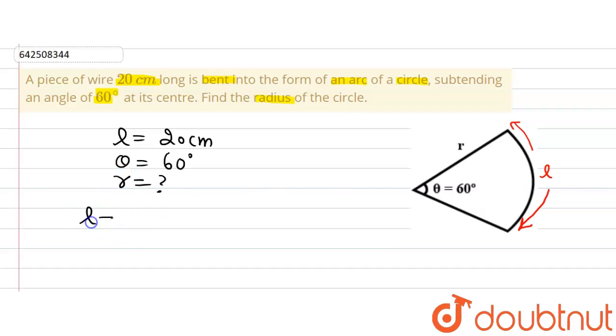We know that length of arc is equal to 2πRθ divided by 360. Now, putting in the values,